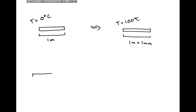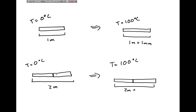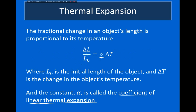Now suppose we have something twice as long — take two meter sticks placed side by side. At zero degrees Celsius, this is two meters. When I heat the whole thing to 100 degrees Celsius, each meter stick becomes one millimeter longer, so the total length becomes two meters plus two millimeters. However, the ratio of the change in length divided by the initial length is the same for both: one millimeter divided by one meter equals one one-thousandth, and two millimeters divided by two meters is still one one-thousandth. This is why we talk about the fractional change in length when discussing thermal expansion.